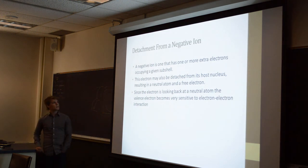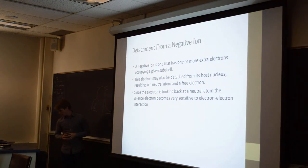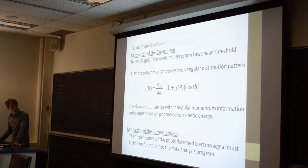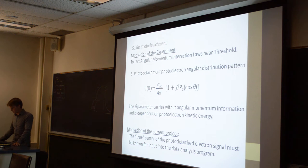So first is what is photodetachment? It's basically the severing of an electron from an atom. And from negative ions, the electron-electron interaction becomes really important since the valence electron is looking back at a neutral atom. So then we're really primarily focused on this.